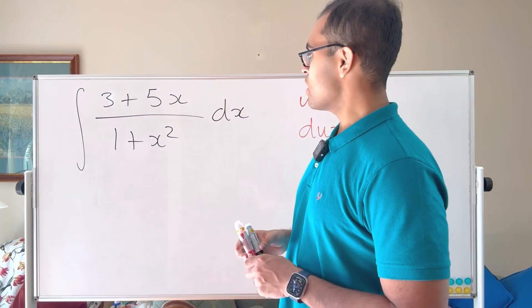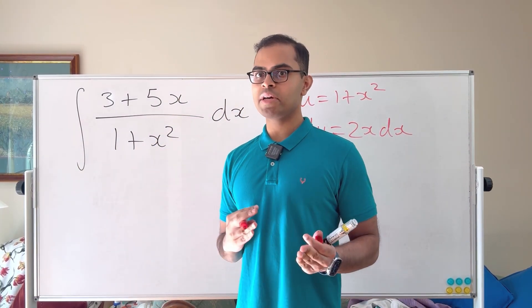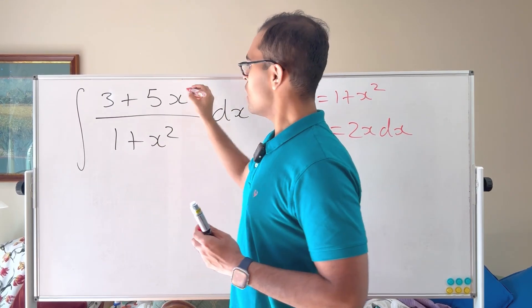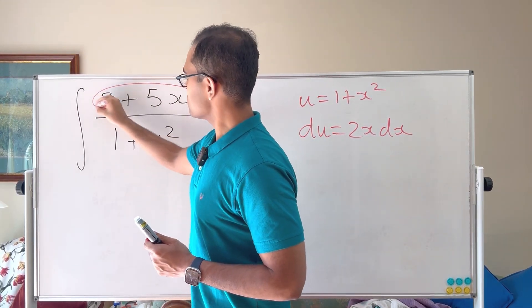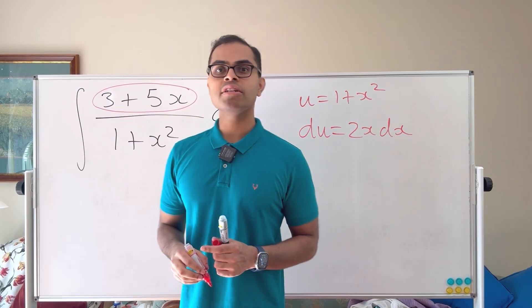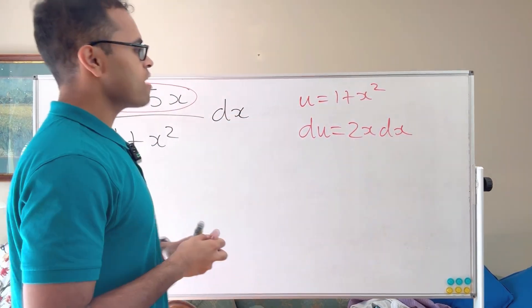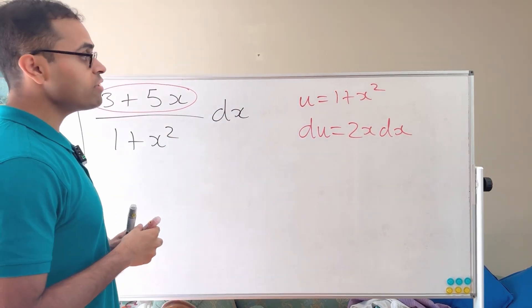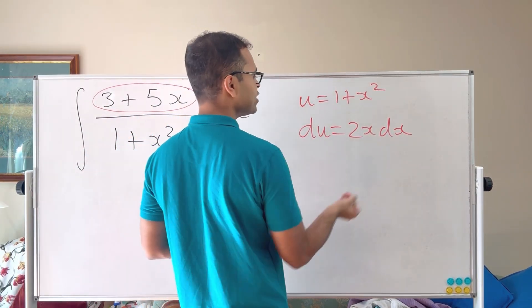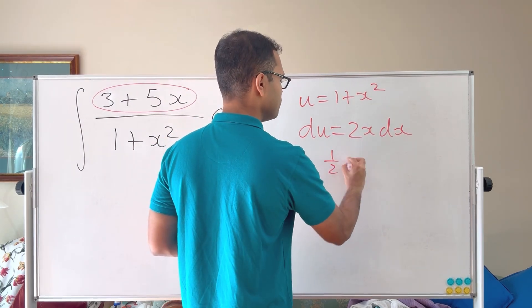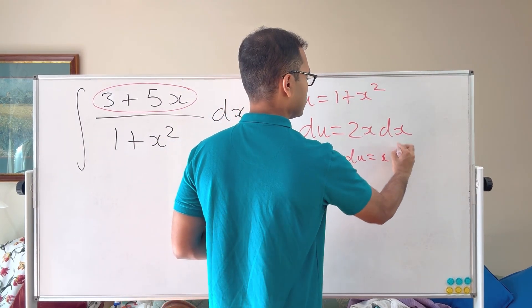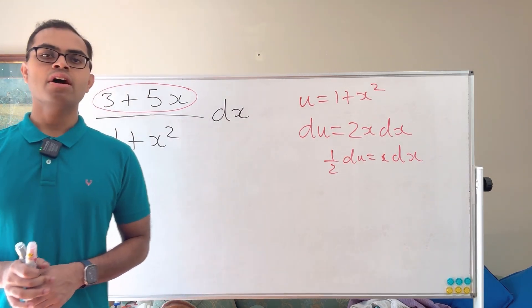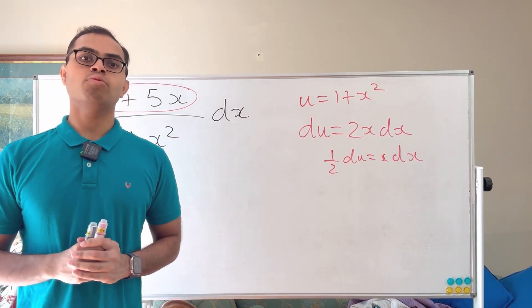So our problem is, we immediately see what our problem is, and this is how we think about math. You know, I'm a research mathematician, so at much higher level problems, I apply the same processes. Here we have the 3 plus 5x. We instead want to have an x, even if we don't have an x. If we have a constant times x, 2x, 5x, it's all fine, because we can then factor out the constant from the integral. Here we can write half du is equal to x dx. Unfortunately for us, we have a 3 plus 5x. So at this point, what do we do?